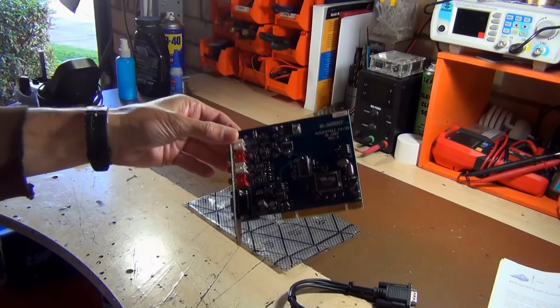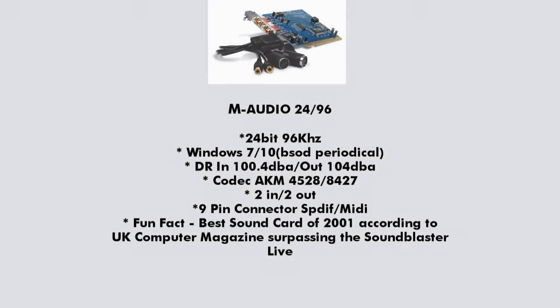Looking at the specs on the 2496: as its name suggests, it's 24-bit 96 kHz. It works in Windows 7 and does work in Windows 10, although occasionally I had blue screening. Dynamic range: input 100.4 dBA and output 104 dBA, putting it in a pretty average class — similar to entry-level audio interfaces today. The codec uses the AKM4528, and an 8427 digital transceiver. Two in, two out via RCA connectors, a 9-pin connector, and SPDIF. They sold a huge number of these cards back in the day.